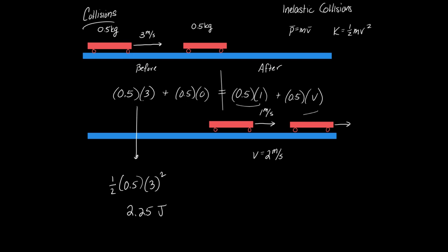Ava, can I pick on you? Can you give me any of the other amounts of kinetic energy? For the one traveling at 1 meter per second, I got 0.25 joules. And then for the second one, I got 1 joule.